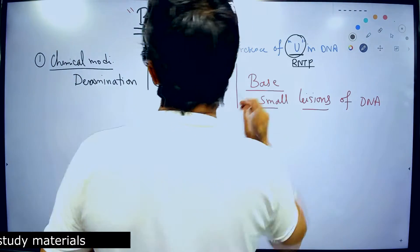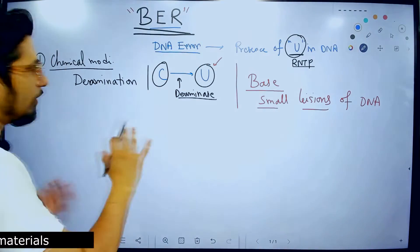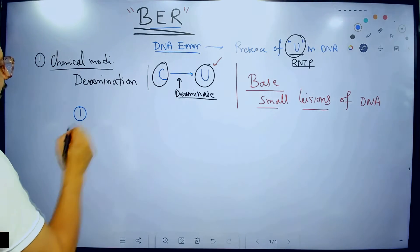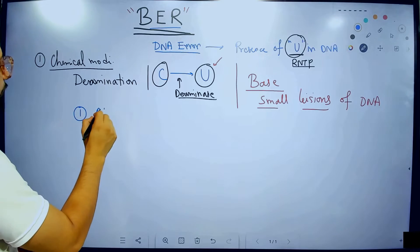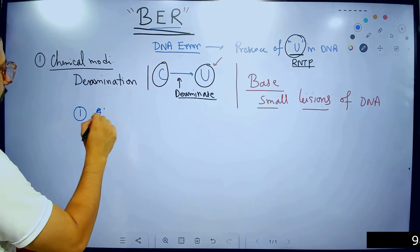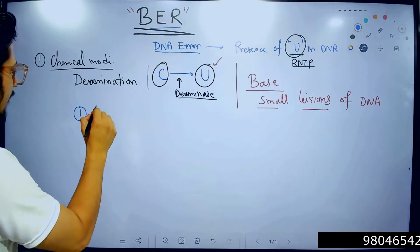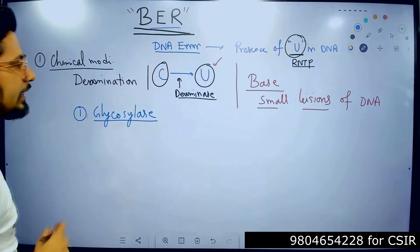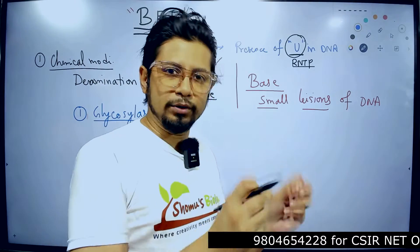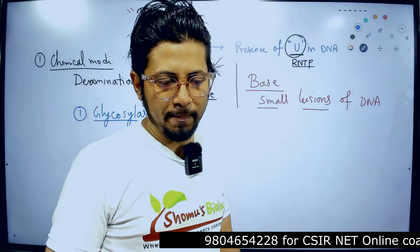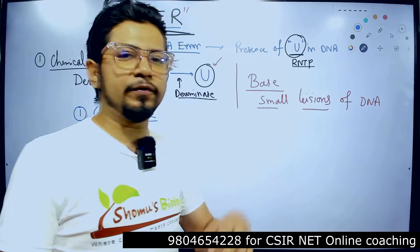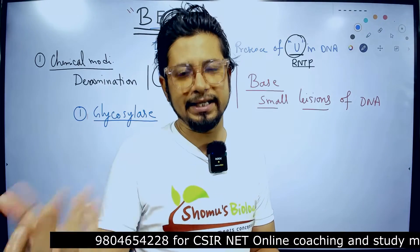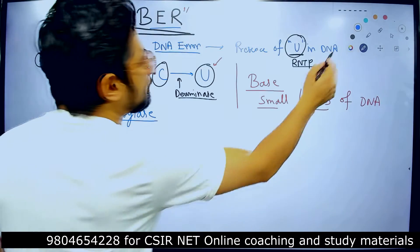Now in this base excision repair mechanism, what are the type of enzymes that are involved in this process? The first enzyme involved here is known as glycosylase enzyme. Now this glycosylase nomenclature is something like if we need to cleave out the uracil, then the name of the enzyme will be uracil glycosylase or DNA uracil glycosylase. Similarly, if you want to cleave out A, then adenosine glycosylase. So, the name will be based on the base that it cuts out. Now the role of glycosylase is to cut the base out.